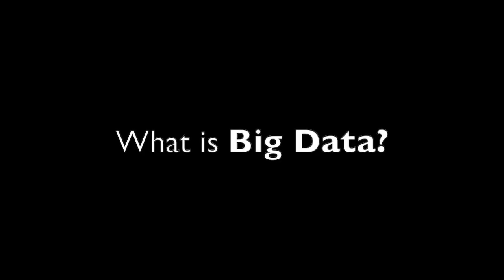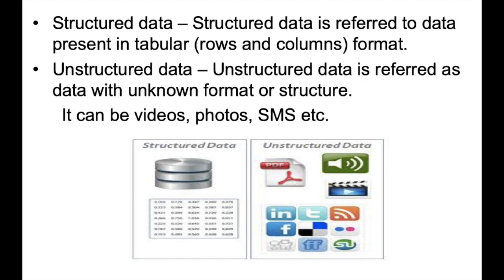Next are the forms of big data. Data is always in two forms: the first is structured form and the second is unstructured form. Structured data means everything is in proper manner — data in tabular form, that means on the basis of rows and columns. Unstructured data is referred to as data with unknown format or structure, which can be in the form of photos, videos, SMS tags, or any form.